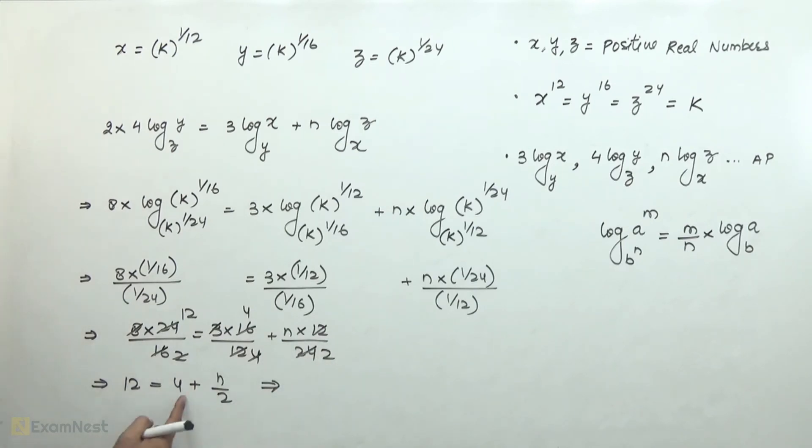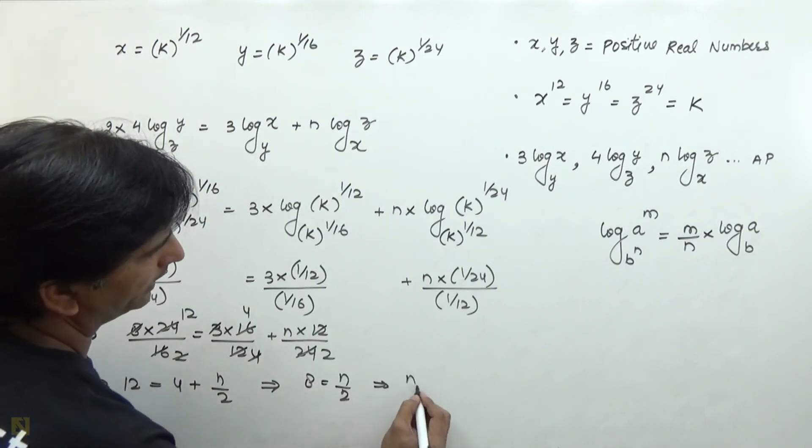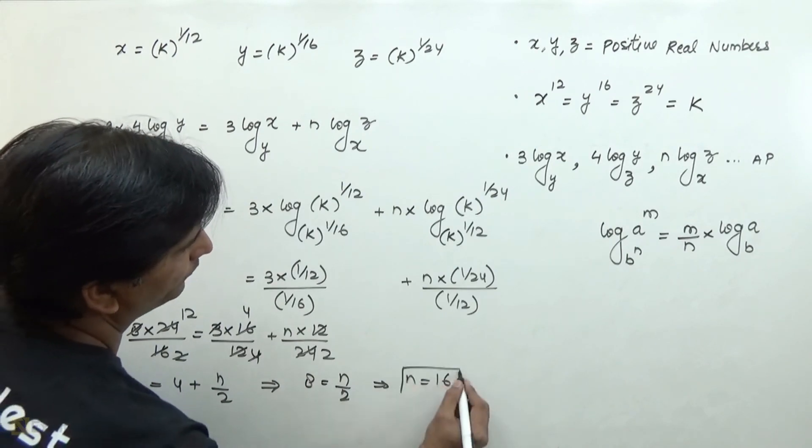Further solving, 12 minus 4 is 8, equals n over 2, so the value of n will be 16.